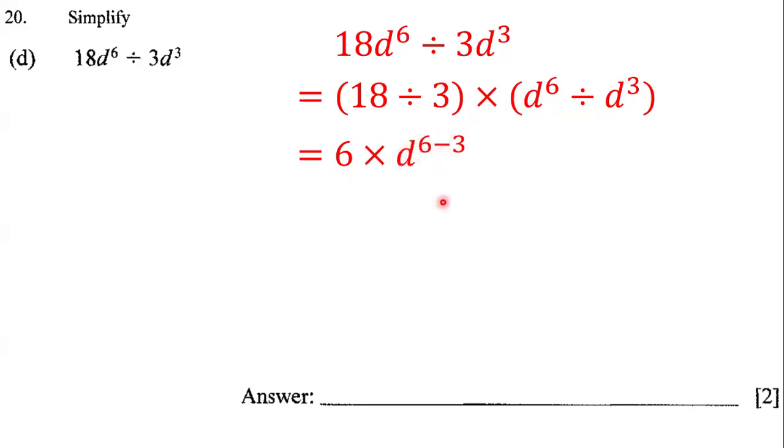What is six minus three? Well, six minus three is definitely three. And so that means that we have six times d to the third power. Six times d to the third power is 6d to the third power, and so our answer to this question is 6d^3.